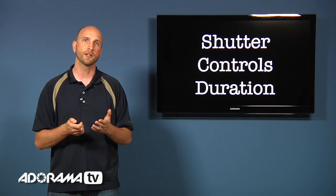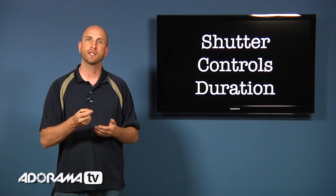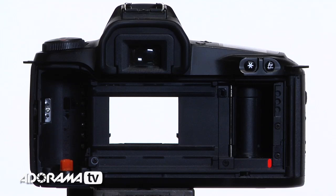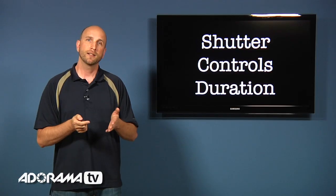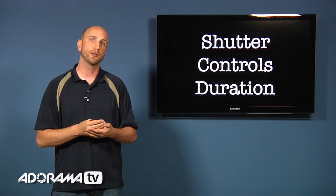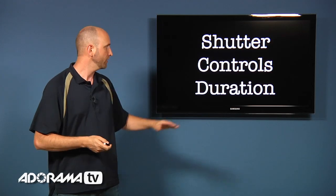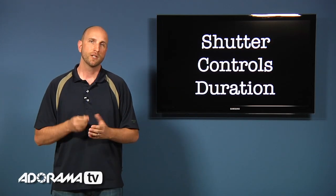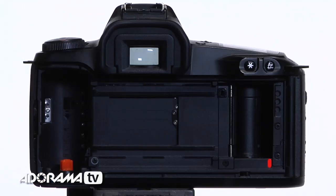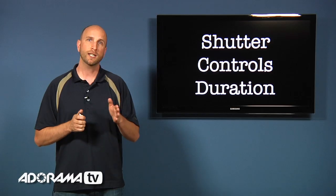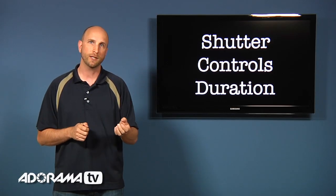Now the second thing is called the shutter. Now the shutter is not like the aperture because it's either open or closed. So it's not open all the time. Now the difference is the shutter can open and close at different speeds. So it controls the duration of the light. So it can open up for a few seconds or a fraction of a second.